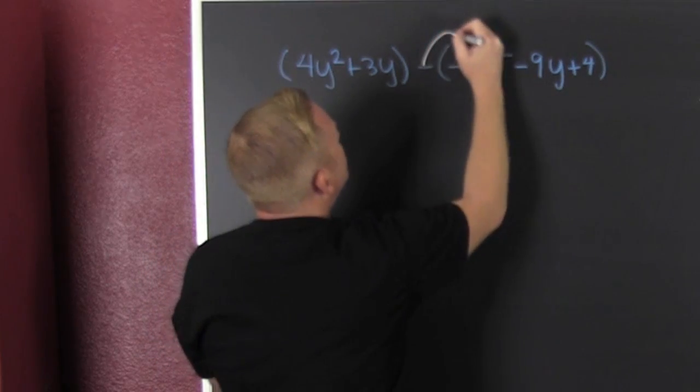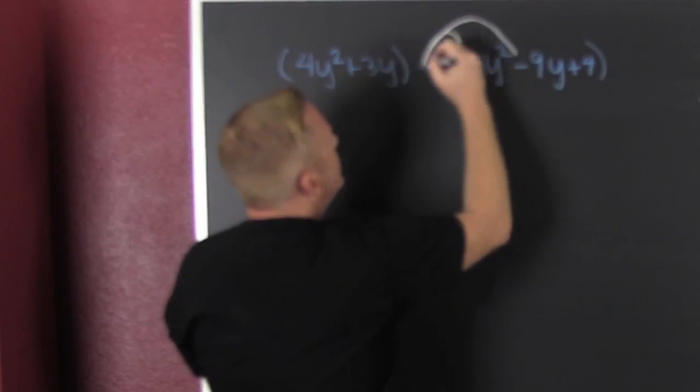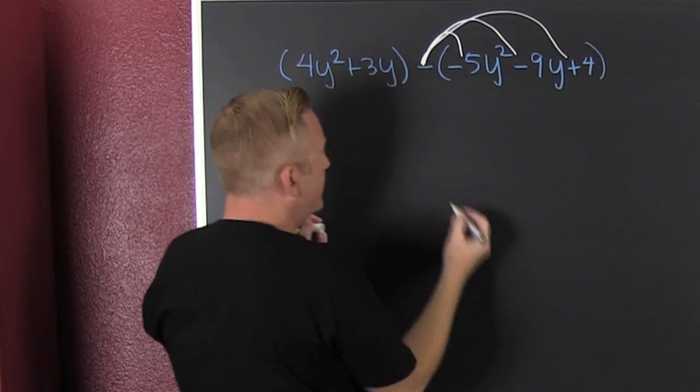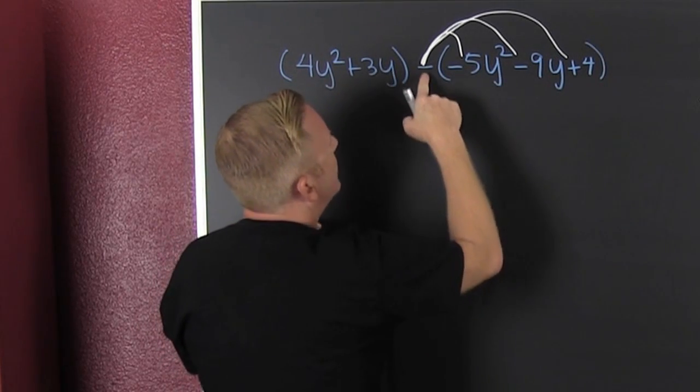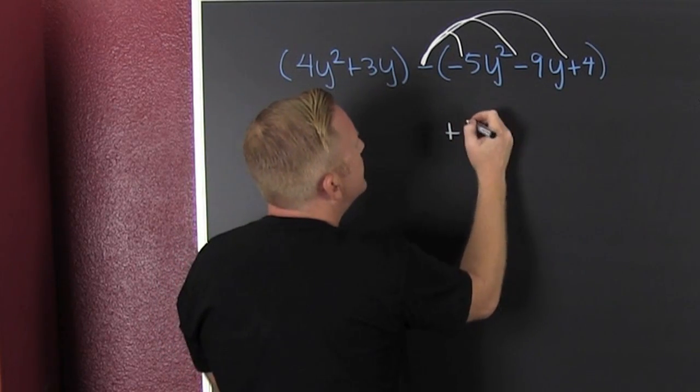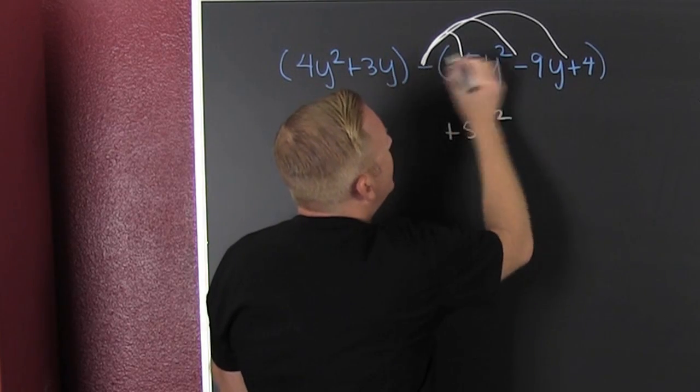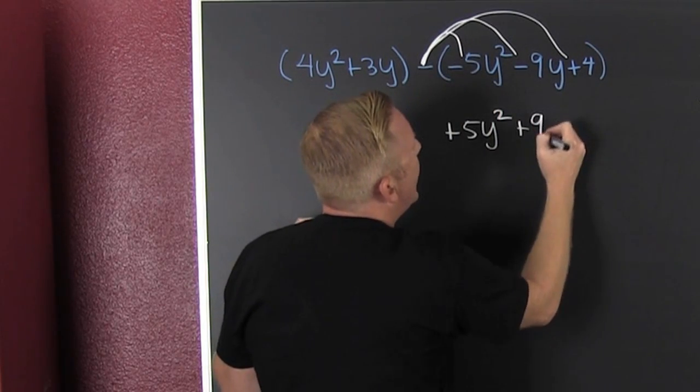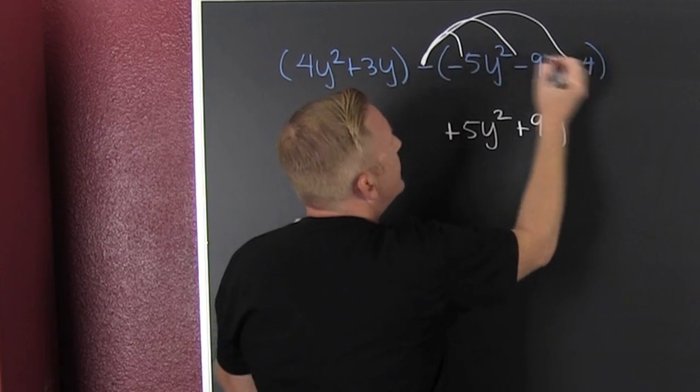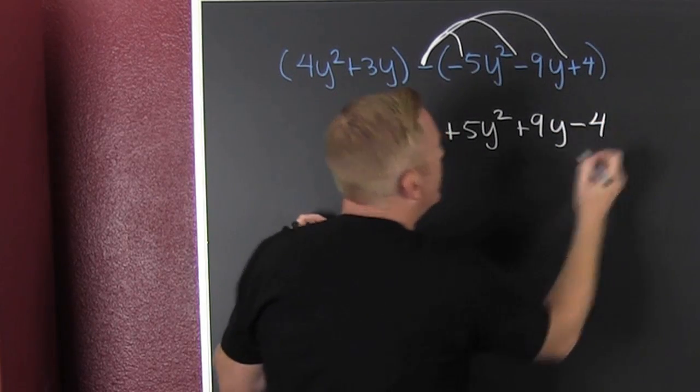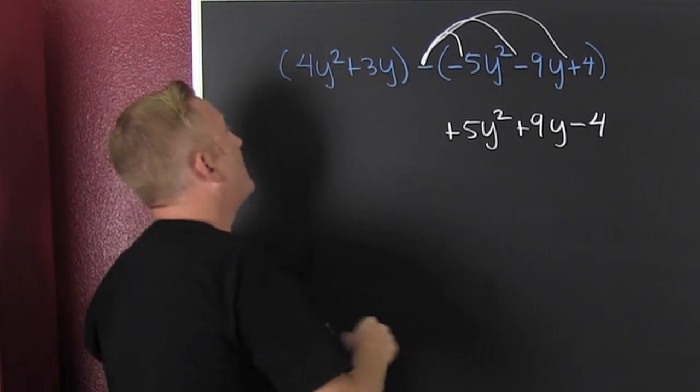It goes and it goes and makes that sound. Minus and minus make plus 5y², minus and minus make plus 9y, and then minus and plus is minus 4.